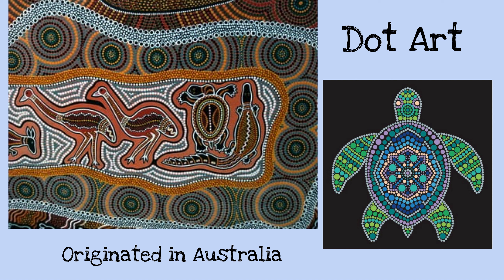It looks a lot different than if you just drew a picture of a turtle, but this is called dot art, and it originated in Australia. I hope you were able to learn about some different artistic expressions and how some cultures express themselves with their art. I hope you were able to learn about different types of art.